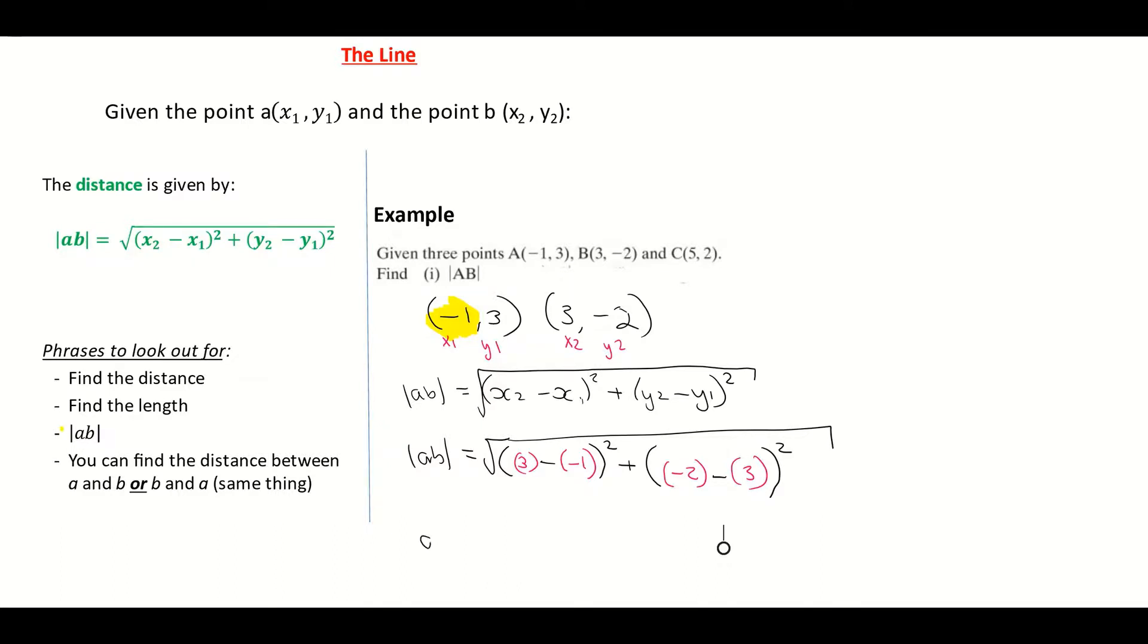Now a little bit of tidying up. So the distance from A to B is equal to √[(3 - (-1))² + ...]. Two minuses are giving me a plus. So it's giving me the square root of 3 + 1, all to be squared.